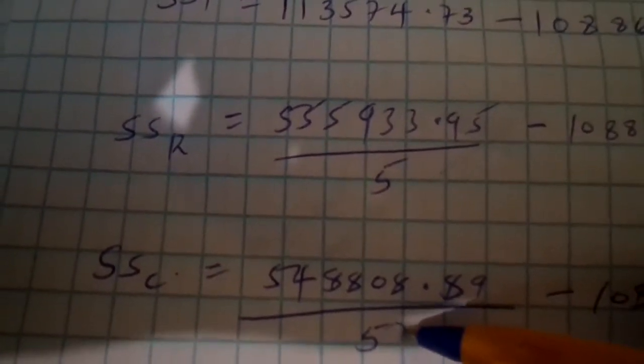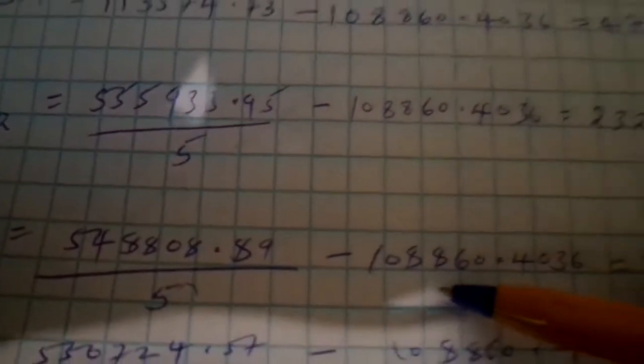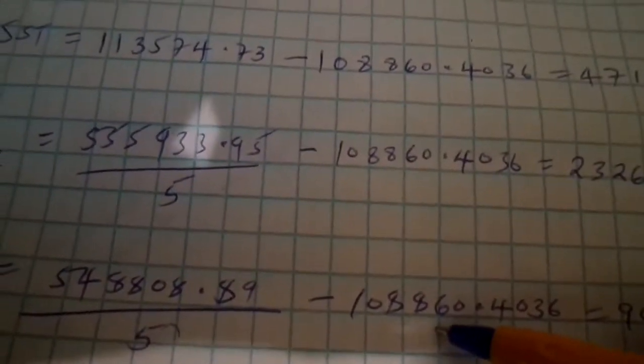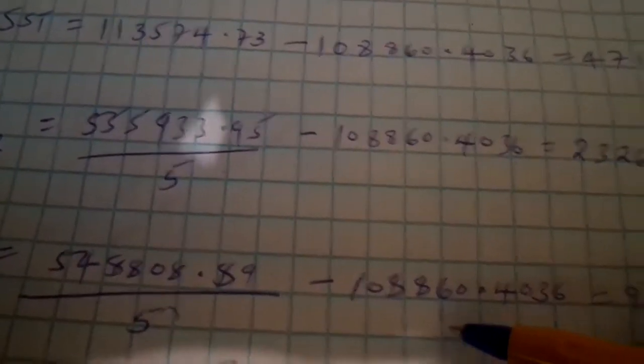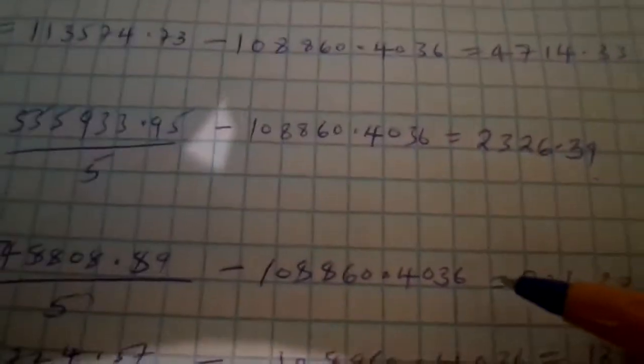For the column sum of squares, we square each column total and add them together. Then we divide by five — the number of rows. We subtract our correction factor from that result to get the column sum of squares.